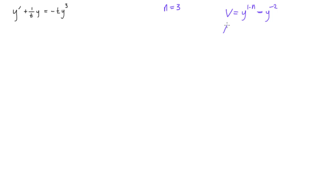Okay, so if we take v prime, remember this was 1 minus n times y to the minus n times y prime. Alright, so this is also the same thing as v prime is equal to negative 2y to the negative 3 times y prime, right? We just took the derivative.